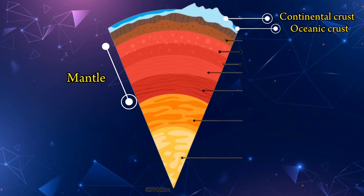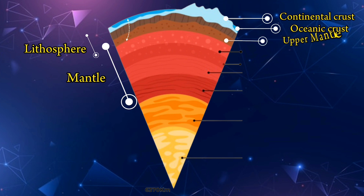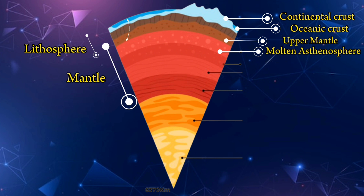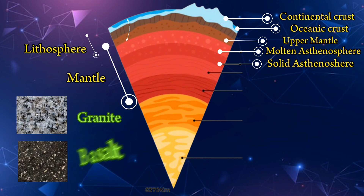Before we get to the next layer — the mantle — let's talk about two more areas that literally come between the mantle and the earth's crust. One is the lithosphere, which includes both the earth's crust and the solid part of the upper mantle. Beneath the lithosphere is the asthenosphere, which is a denser, weaker, and semi-molten part of the upper mantle. Both are made up of mostly granite and basalt and have different roles.